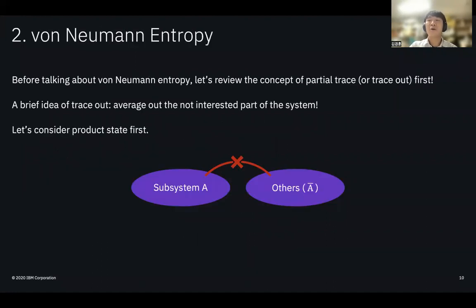The other physical value for measuring localization and thermalization is von Neumann entropy. But before telling you about von Neumann entropy, I will briefly review the concept of partial trace first.